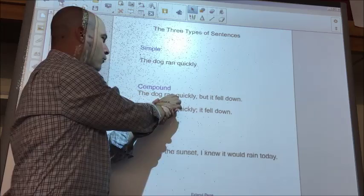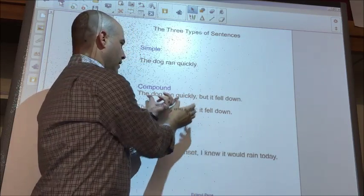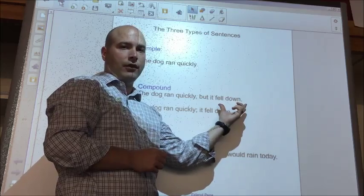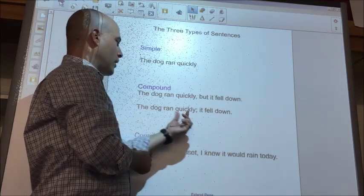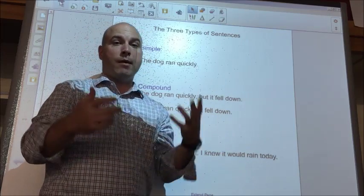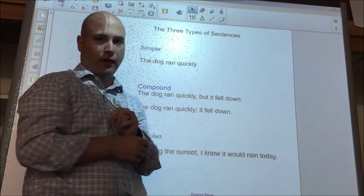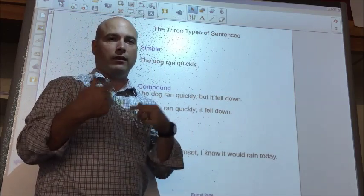A compound sentence. The dog ran quickly, comma, but it fell down. So you have independent clause, independent clause. The dog ran quickly, semicolon, it fell down. Independent clause, independent clause. And remember, an independent clause is a synonym for a simple sentence. They are the same thing. They can stand alone.